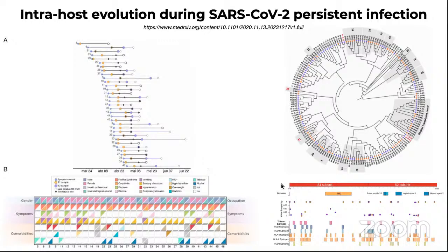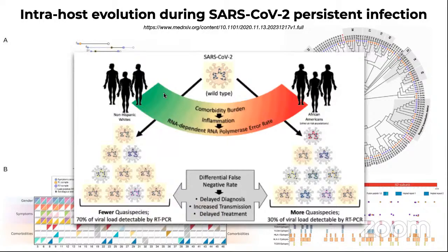Prolonged treatment, comorbidities, and treatments with antivirals and convalescent plasma could all lead to this effect of selecting minor quasi-species variants. Another implication proposed hypothetically is that non-Hispanic whites and African Americans might have differences in these dynamics because of different comorbidities, longer treatment times, and different immune responses — leading to changes in the balance of dominant quasi-species, potentially resulting in lower detection and higher mortality rate.